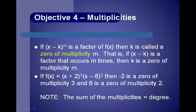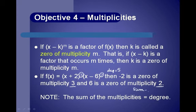Note that the sum of the multiplicities is equal to the degree. For this function, we had a power of 3 and a power of 2, so the degree of this polynomial is 5. With multiplicities of 3 and 2, the sum equals 5.